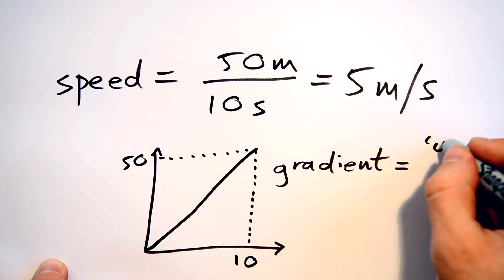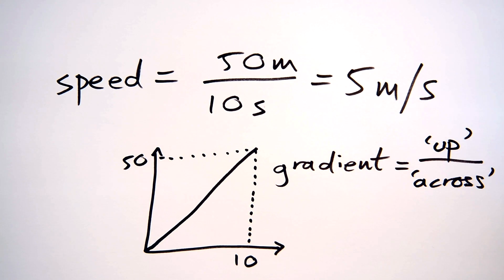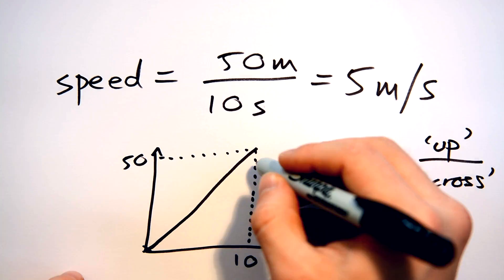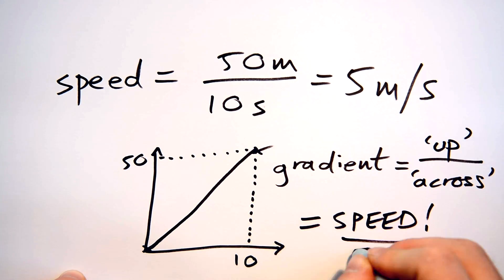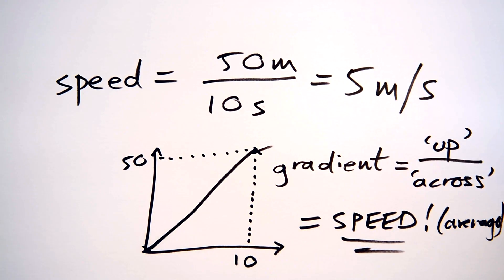Put simply, gradient is just up divided by across using two points on a graph. That's quite important though that the gradient of a distance time graph equals the speed, or we might say average speed.